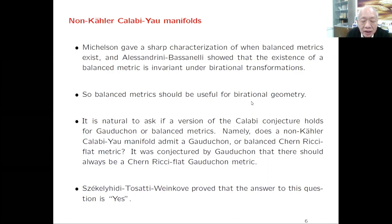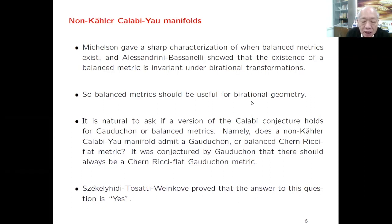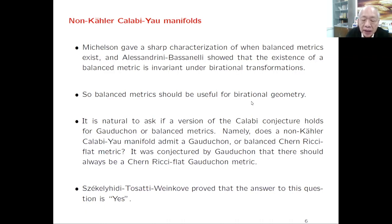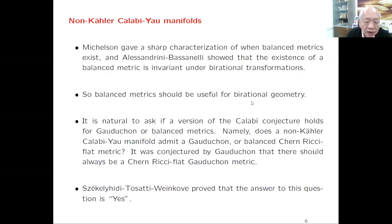The Chern connection is important and useful, but last week Jim Simons wrote to me proposing a very beautiful and interesting connection that is different from the Chern connection—one that preserves the complex structure J but not the metric structure, minimizing some norm of the differentiation of the metric. In any case, in the Chern-Ricci-flat setting, Tosatti, Weinkove, and Szekelyhidi proved the answer to this question is yes, by solving a Monge-Ampère equation on a non-Kähler manifold.